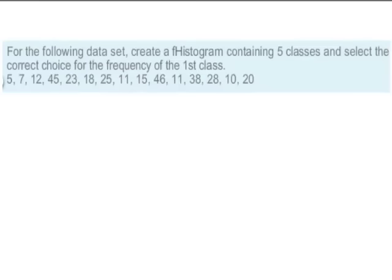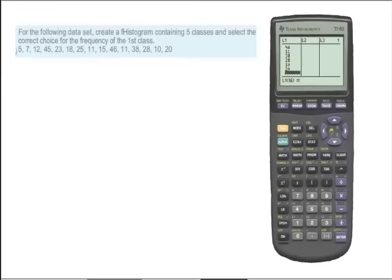In this problem, we're asked to create a histogram containing five classes and select the correct choice for the frequency of the first class. So the first step will be to put this data into list 1 in the TI-83.